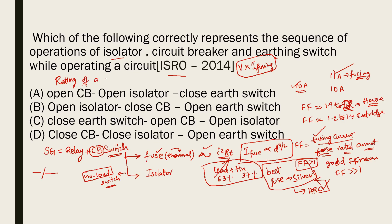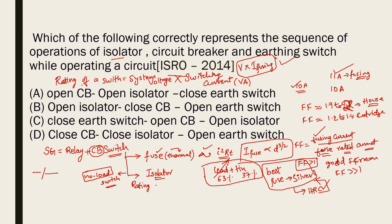The rating of any switch is in VA (volt-amperes), i.e., apparent power. For an isolator, since it is operated under no-load conditions, the current at the time of switching is zero. Therefore, the rating of an isolator is 0 MVA or 0 volt-amperes.